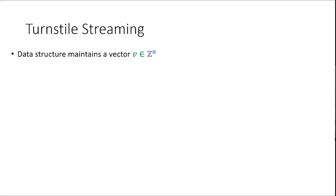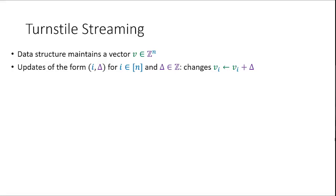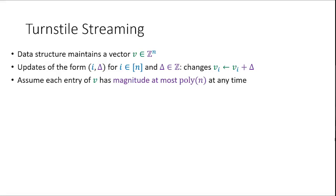This is a data structure model where you want to design a data structure to maintain a vector of n integers. The types of updates you want to support are that you'll get a pair of an index i and a delta, which is some integer — it could be positive or negative — meaning you change the i-th entry of your vector by adding delta to it. We usually assume that throughout the sequence of updates, each entry of the vector is bounded in magnitude by at most a polynomial in n, so all entries fit into log n bits.